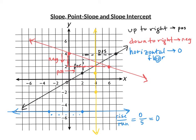The yellow line is vertical. Any two points give a rise of three over a run of zero. Three over zero — the calculator says error. In mathematics we call this undefined. A vertical line has undefined slope.